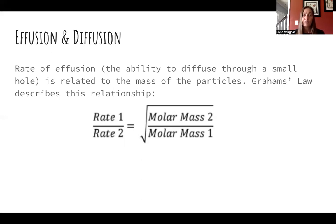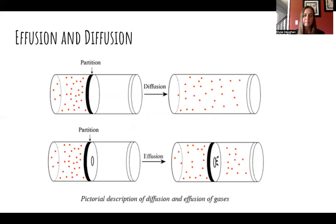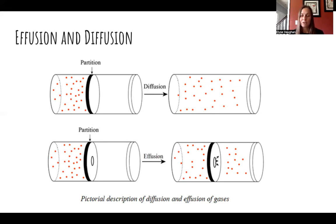You won't be asked to apply Graham's law quantitatively, but you may need to explain it qualitatively. Diffusion is the unimpeded movement of gas molecules — for example, if you walk past a candle store in a mall and smell the scents from the hallway, that's diffusion. Or walking into a building and smelling chemicals from a biology lab — that's also diffusion.